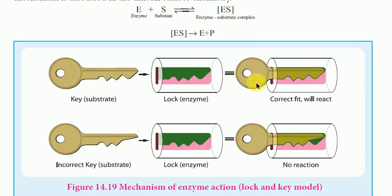If the fit is incorrect, there is no chemical reaction. There is no formation of the intermediate complex and no product is formed. This demonstrates the specific nature of enzymes — a particular enzyme will only bind with its specific substrate, and through intermediate conversion, decompose into the product. The enzyme is specific in nature.